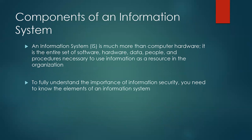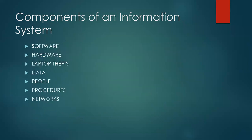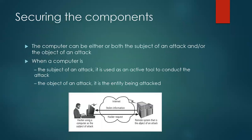An information system is much more than computer hardware. It is the entire set of software, hardware, data, people, and procedures necessary to use information as a resource in the organization. To fully understand information security, one must know the elements of an information system: software, hardware, data, people, procedures, and networks.